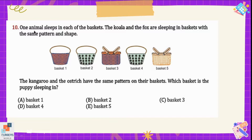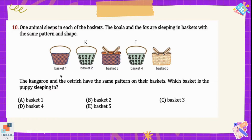Question number ten: one animal sleeps in each basket — the koala and fox are sleeping in baskets with the same pattern and shape; the kangaroo and ostrich have the same pattern on their baskets. Which basket is the puppy sleeping in? Baskets two and four have the same pattern and shape, so the koala and fox are in baskets two and four. Baskets one and three have the same pattern but not the same shape, so the kangaroo and ostrich are in baskets one and three.